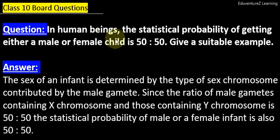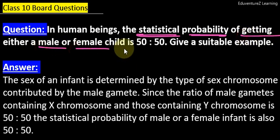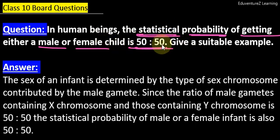So the question is: in human beings, the statistical probability of getting either a male or female child is 50-50%. This question is related to biology only. The statistical probability is that a human being can either be a male child or a female child. Why is this 50-50 statistical representation — why is this?